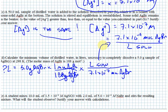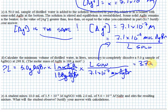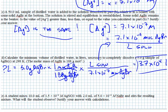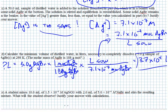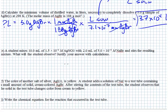Moles of silver bromide cancel, and the calculation gives us — to two significant figures — 3.7×10⁴, or 37,000 liters of solution to dissolve that 5 grams. If that doesn't tell you that silver bromide is pretty insoluble, I'm not sure what will.